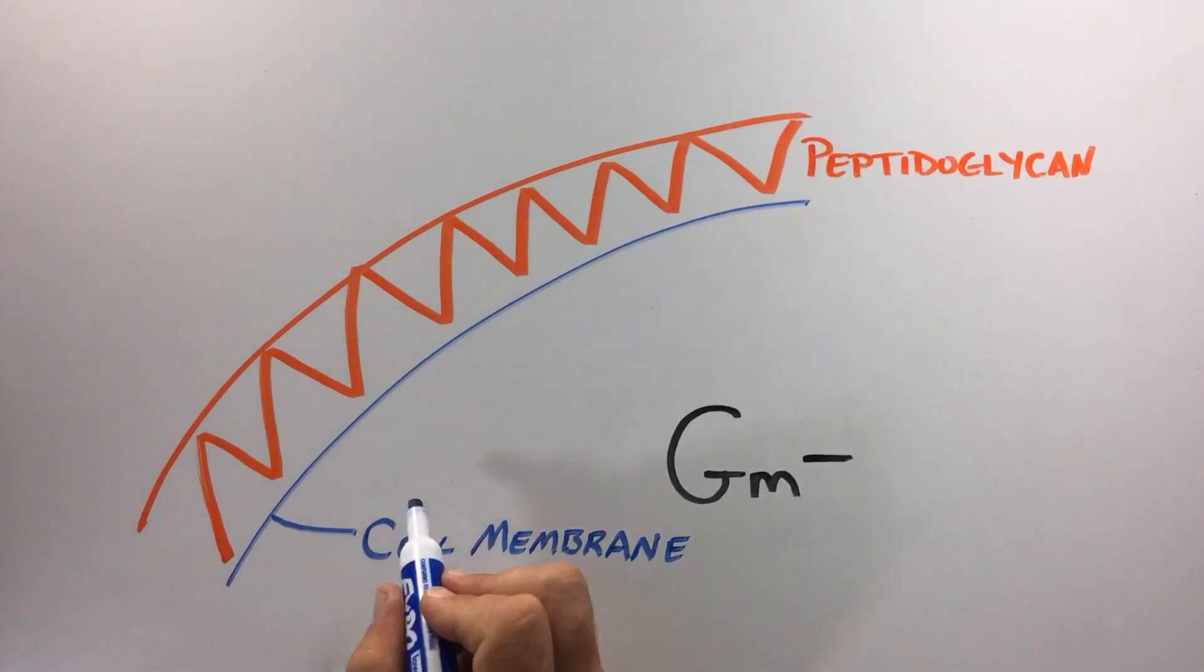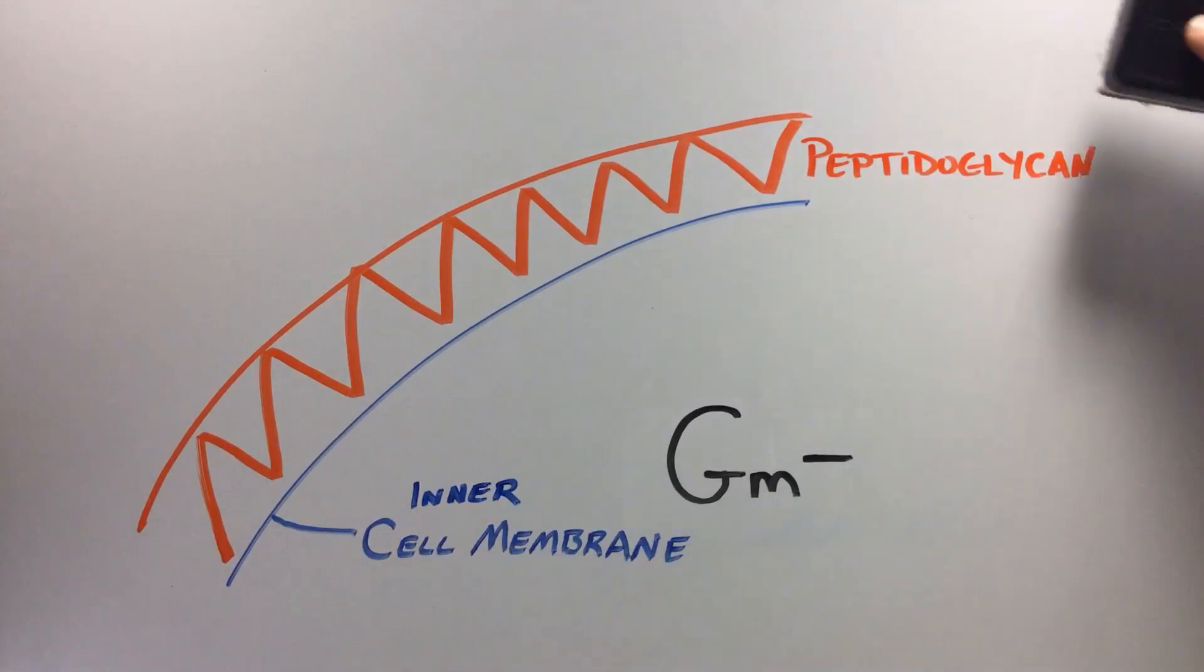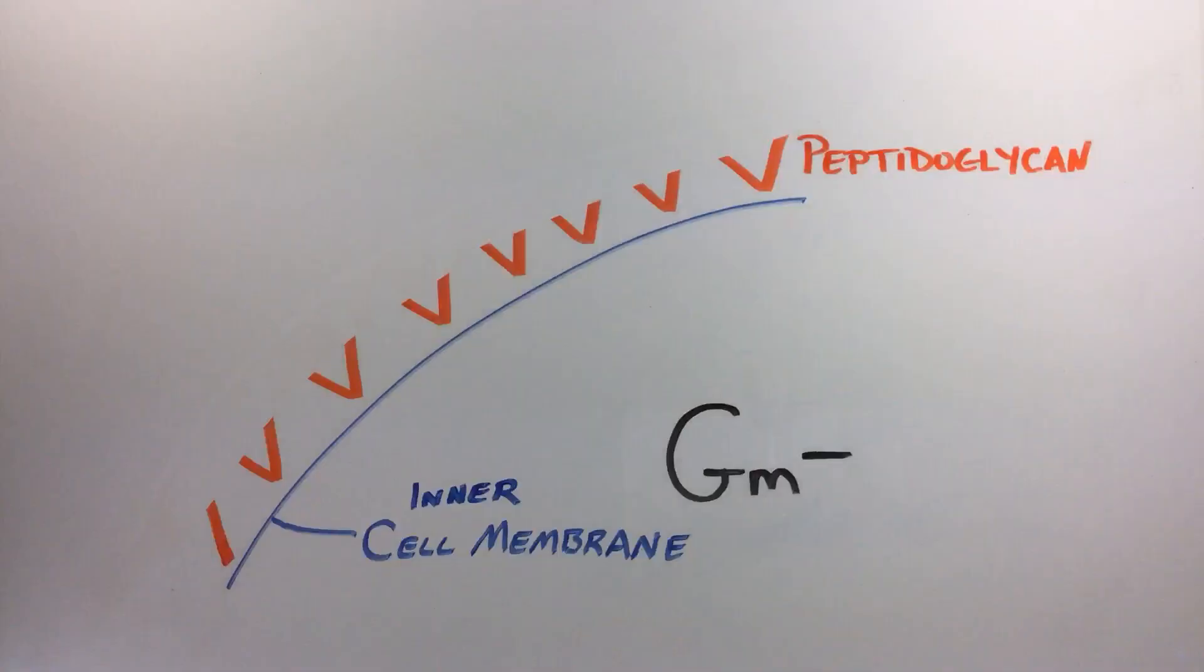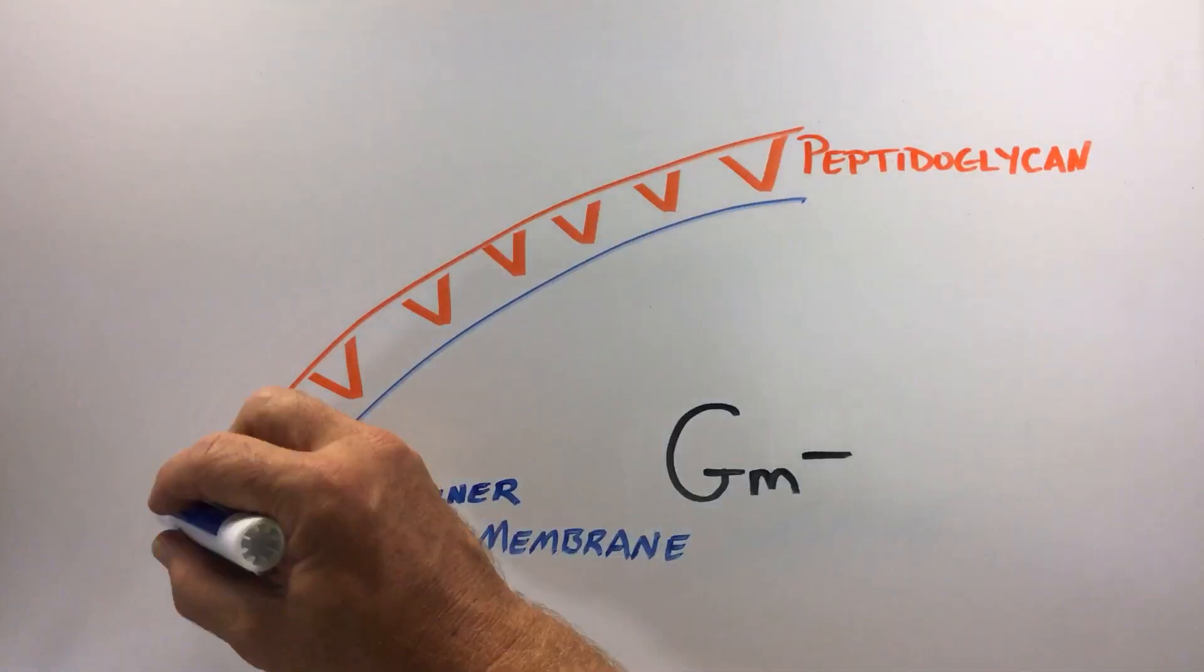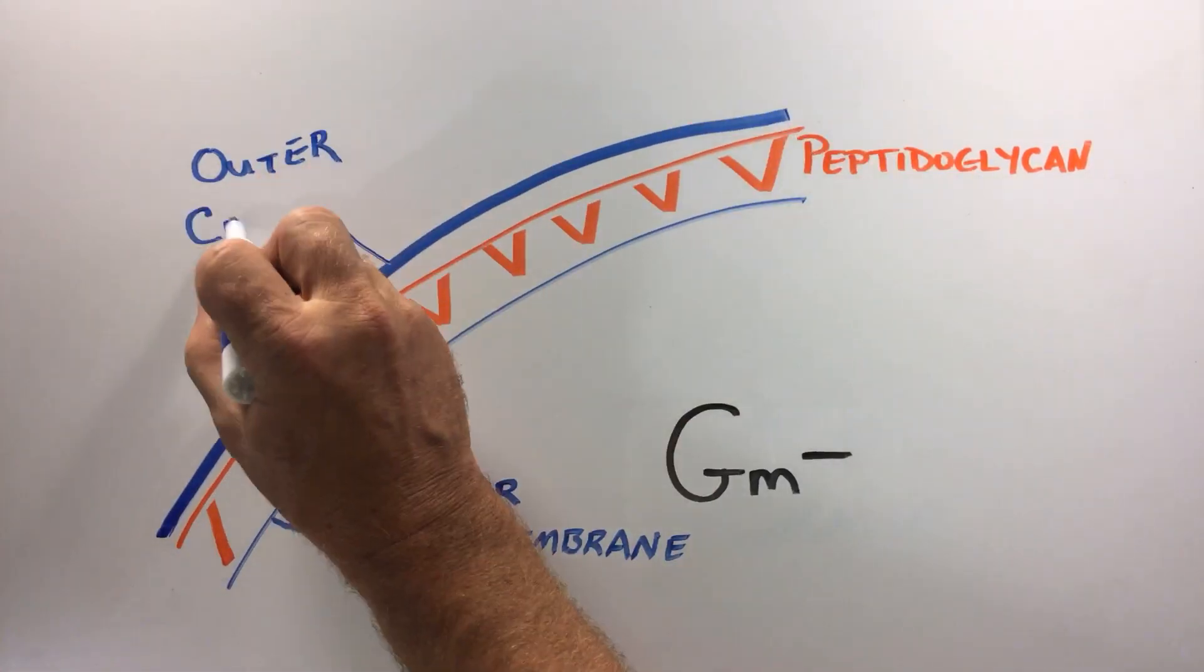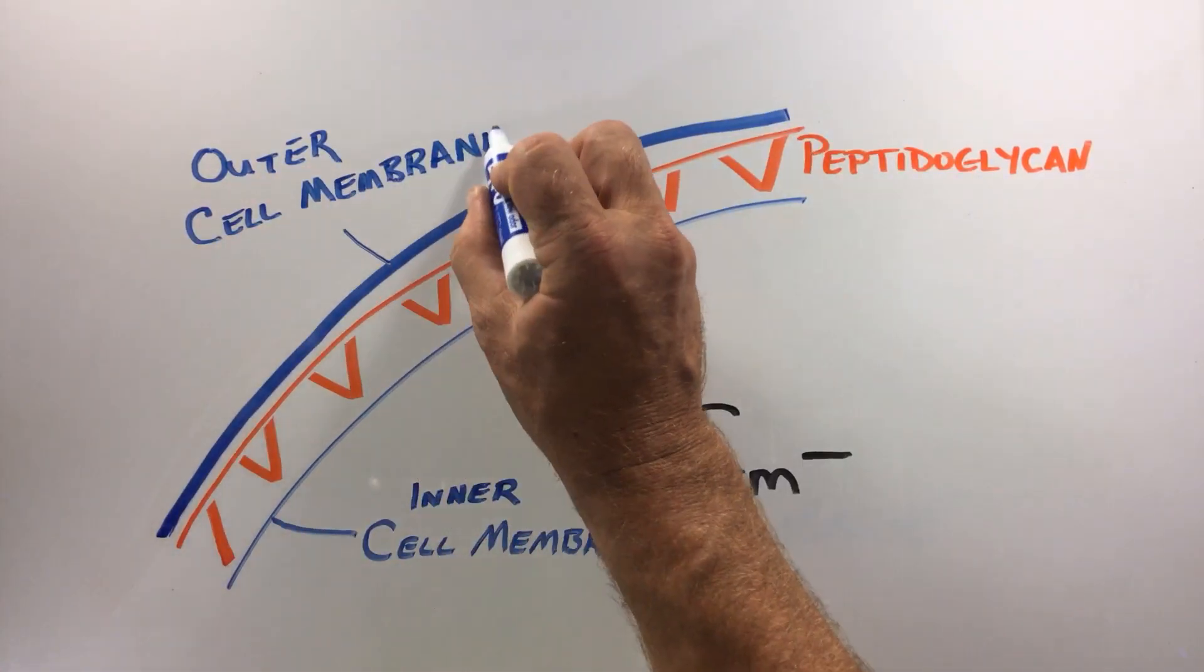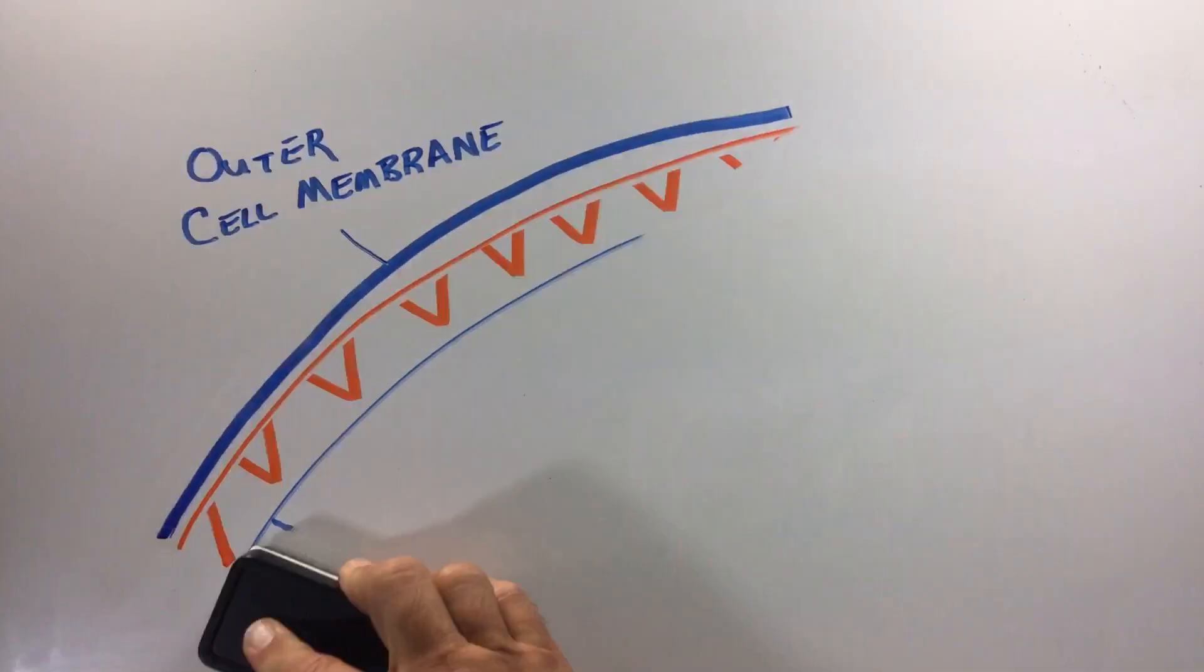Gram-negative bacteria have an inner cell membrane, a thin layer peptidoglycan, and an outer membrane. This outer membrane is dissolved, and the thin layer peptidoglycan loses its crystal violet when decolorized. Safranin was used to counterstain the Gram-negative cells pink to make them visible.